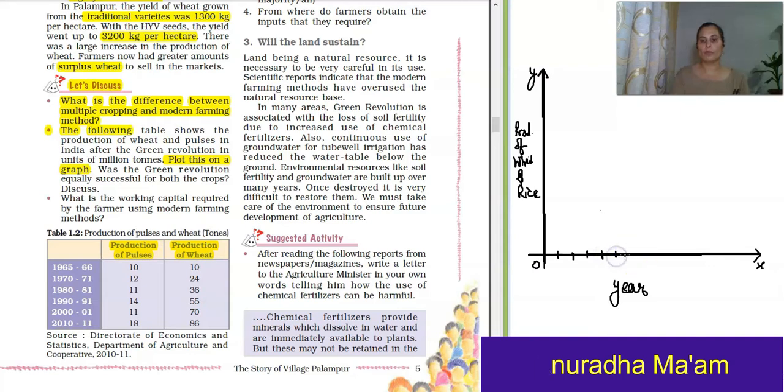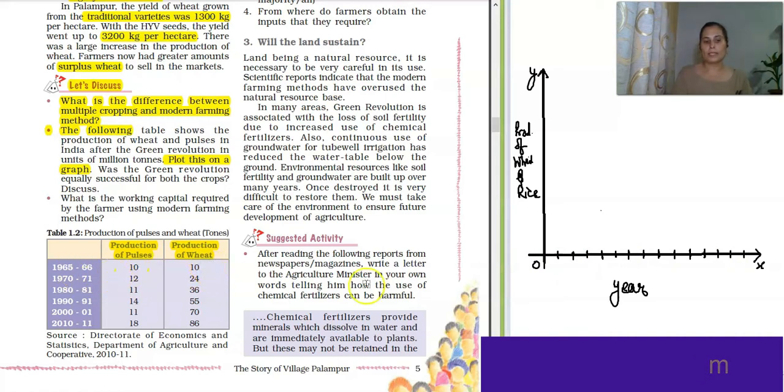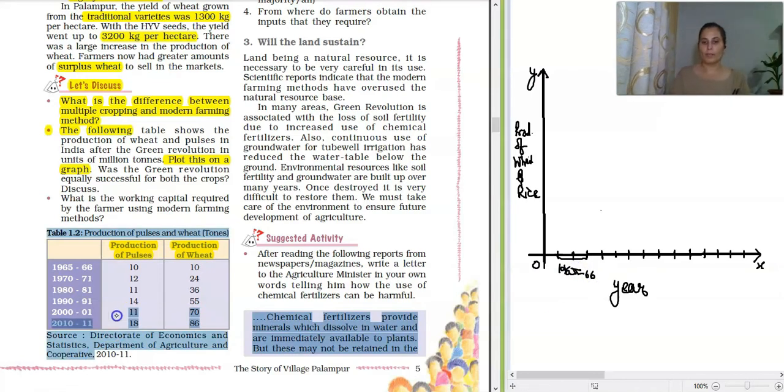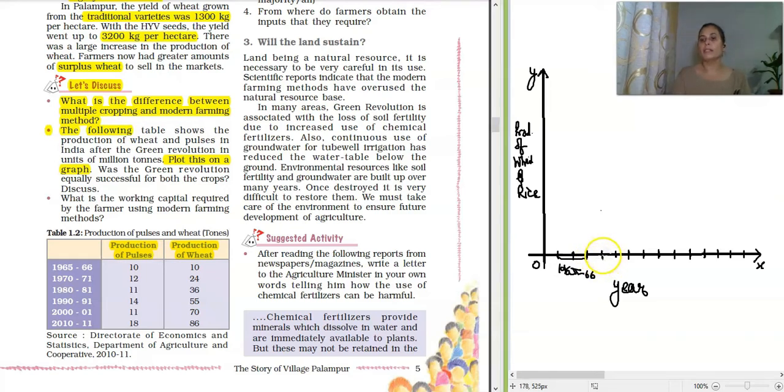So I will make only for first two years and rest is your homework. You must complete and make it in your notebook. I will make it live so you will make it in your notes for the first two boxes which you must allot. So I am at first two boxes which are allotted. These are bar diagrams, they are not connected to each other. Then what will be the next two boxes? 1970 to 71.